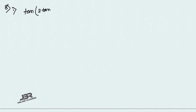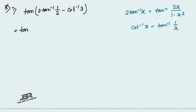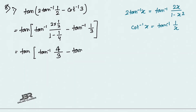Now evaluate: tan(2tan⁻¹(1/2) − cot⁻¹(3)). Use the formula 2tan⁻¹(x) = tan⁻¹(2x/(1−x²)) and cot⁻¹(x) = tan⁻¹(1/x). So 2tan⁻¹(1/2) = tan⁻¹(2·(1/2)/(1−1/4)) = tan⁻¹(1/(3/4)) = tan⁻¹(4/3). And cot⁻¹(3) = tan⁻¹(1/3).